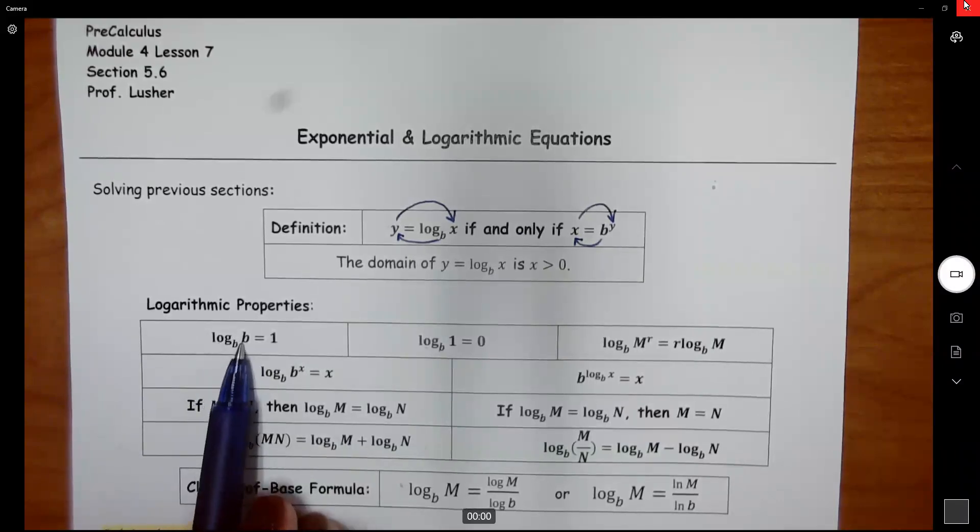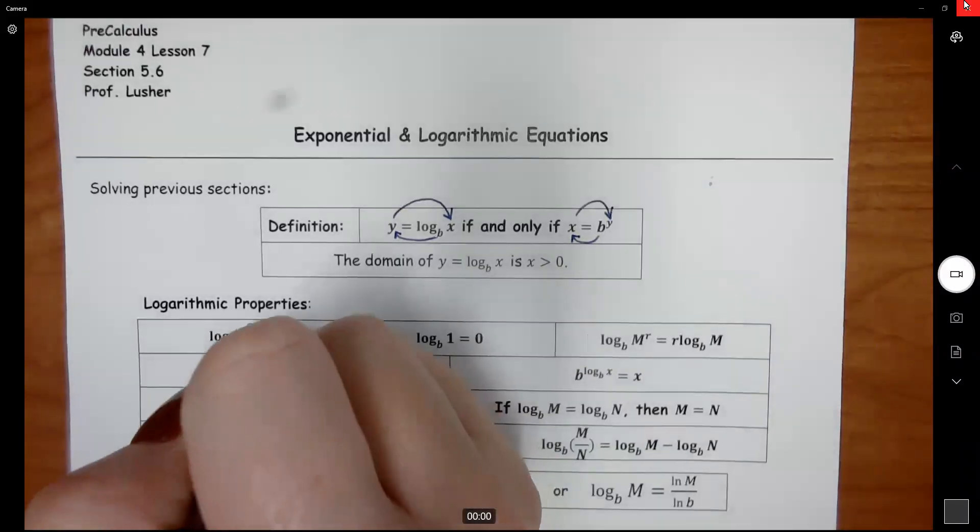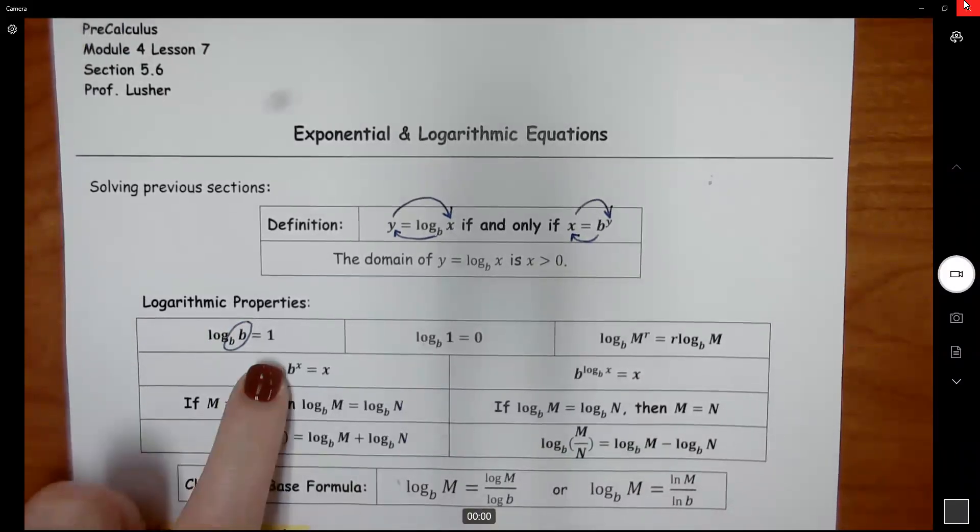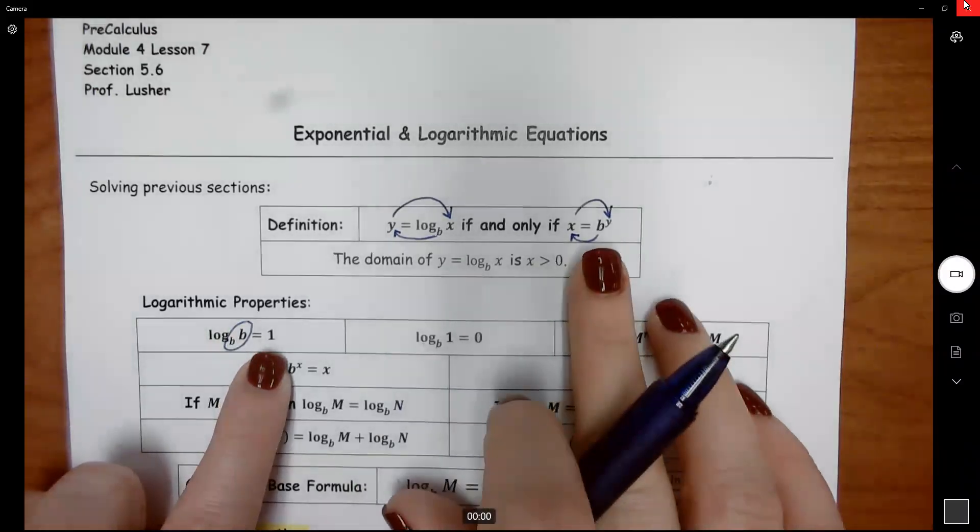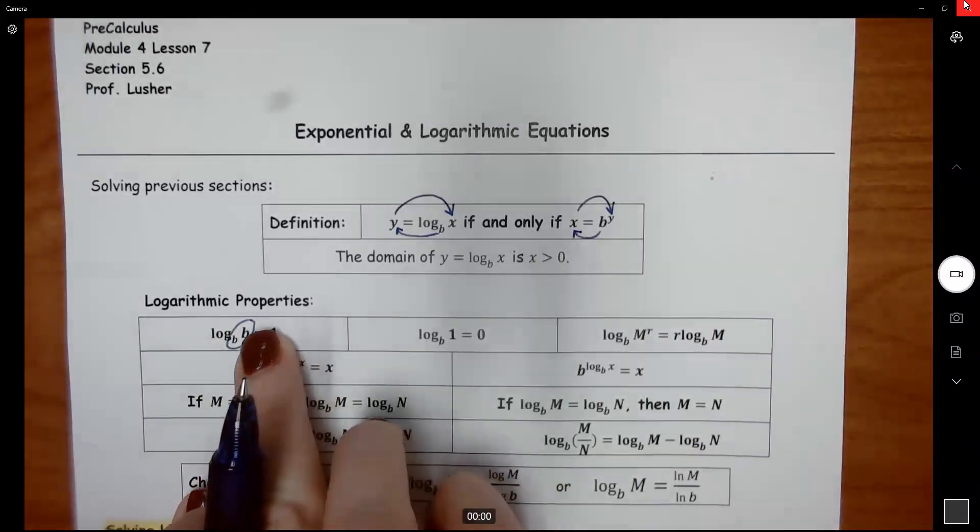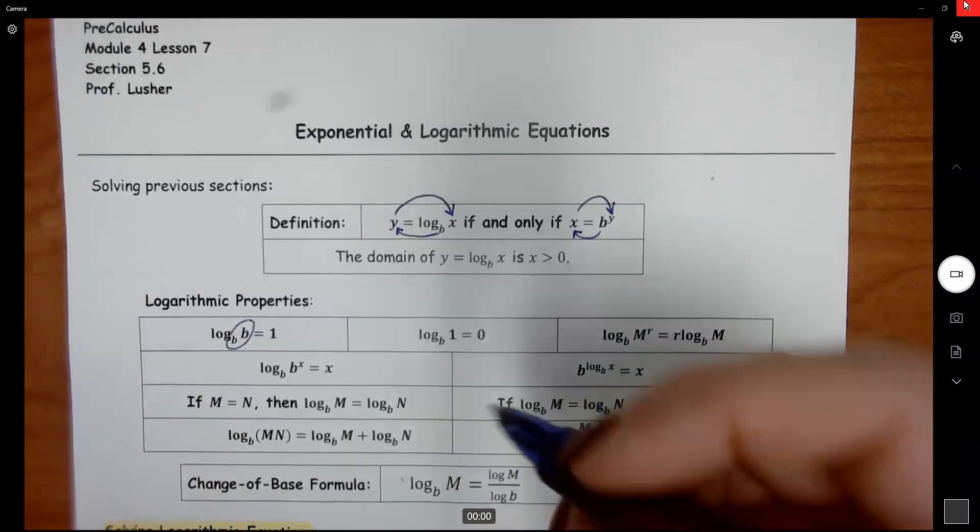The first one is that we have log base b of b, and it equals one. So if your base and your big number of that log are the same thing, then it's going to equal one, because if I rewrote that, that would be b to the first power, that's going to equal b.